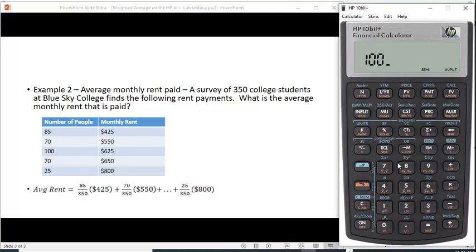And then we have $650, input, and there were 70 of those students, sigma plus. And finally there were some students living in some much nicer housing paying $800 a month, input, and 25, sigma plus.